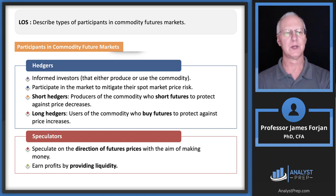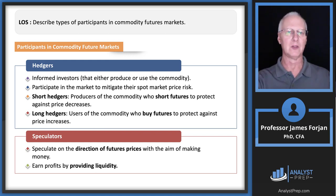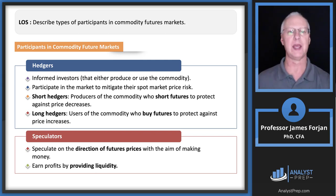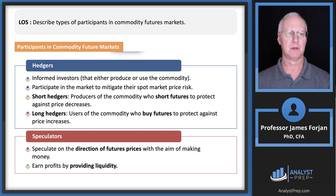Let's look at the different types of financial market participants in commodity futures markets. We have a spot market — the exchange of cash for a commodity today — and a futures market, which is an agreement to trade at some future date at a pre-agreed price, with no exchange of cash today.